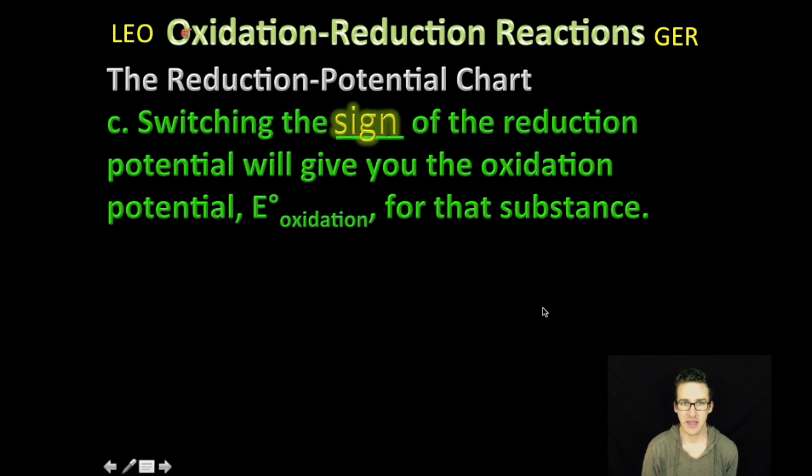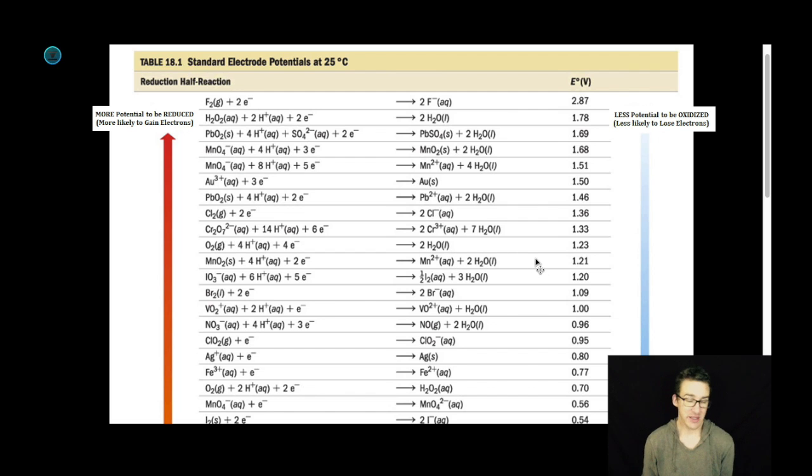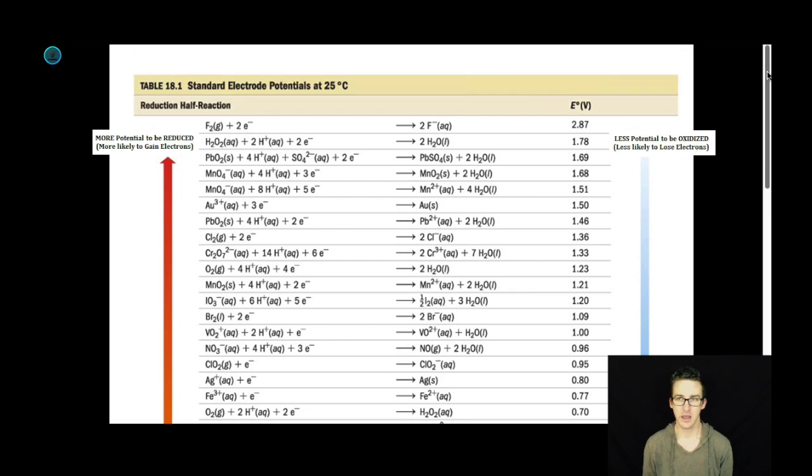It's also important to note that switching the sign of the reduction potential will give you the oxidation potential, or E sub oxidation, for that substance. Even though we're often given the standard reduction potentials, it also tells you the potential for a substance to be oxidized.